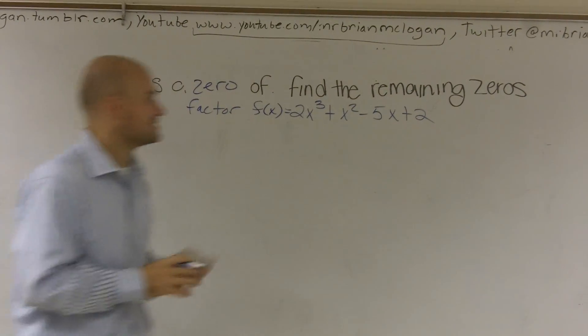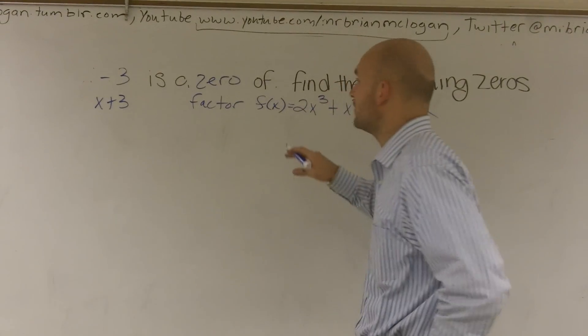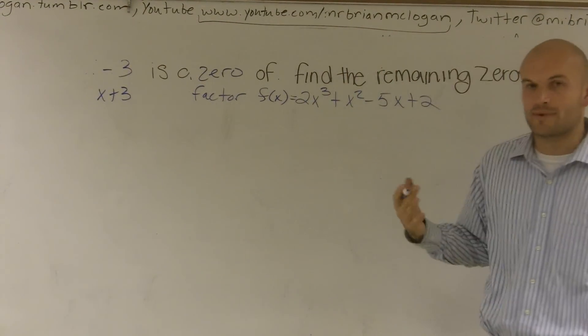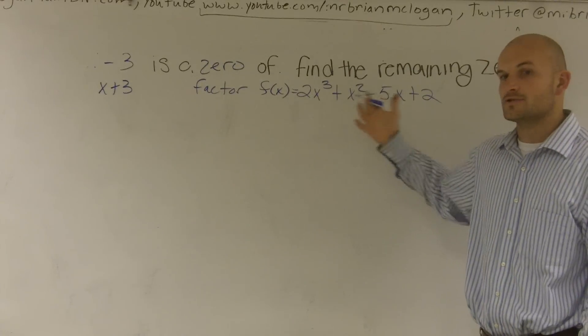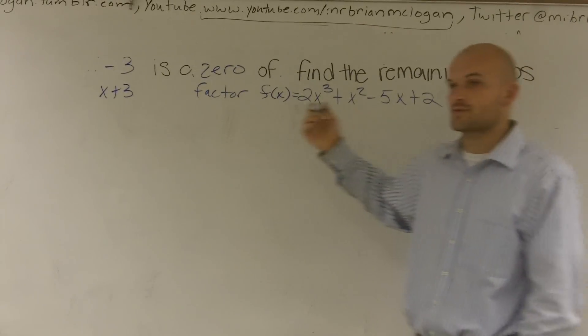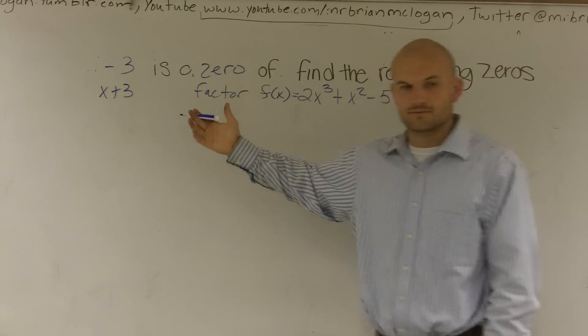So we need to figure out the remaining zeros. Well, one thing we need to do, the remaining zeros is also kind of like the remaining factors. So when we're trying to factor some out, what we're going to do is we're going to have to do division.